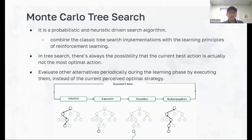Mittens is actually just a configuration of the Komodo engine, which is owned by Chess.com. The difference between Stockfish and Komodo is that Komodo uses Monte Carlo Tree Search. Monte Carlo Tree Search is a probabilistic and heuristic-driven search algorithm. We combine classical search tree implementations with the learning principles of reinforcement learning. In the tree search, there's also a possibility that the current best action is not the most optimal action, so we evaluate other alternatives during the learning phase by executing them instead of the current perceived optimal strategy. A diagram shows that Monte Carlo Tree Search expands more broadly rather than searching deeply down the tree to find better probabilities.